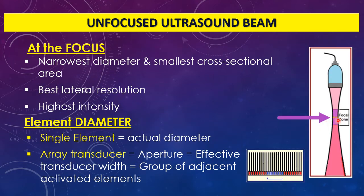At the focus, the beam has the narrowest diameter and the smallest cross-sectional area. This represents the best lateral resolution, since lateral resolution is related to beam diameter. At this point we also get the highest intensity, because intensity equals power divided by area — and since the cross-sectional area is at its minimum at the focal point, the intensity is at its maximum there.